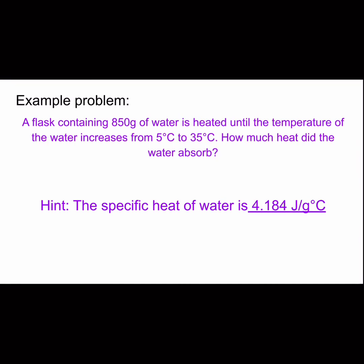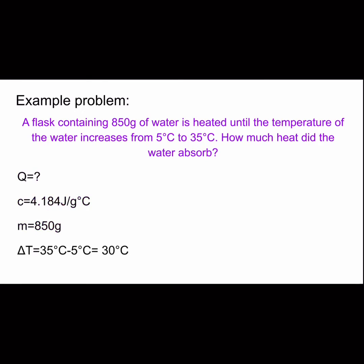We're going to use that to solve for heat. I plugged in all the stuff that I know so far. We're looking for Q, we're looking for heat. C is what we know about water, the specific heat. M is mass, we have 850 grams. And delta T, the change in temperature, is just 35 minus 5, so that's going to be 30.